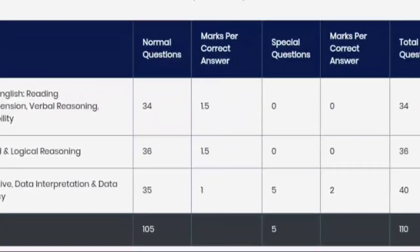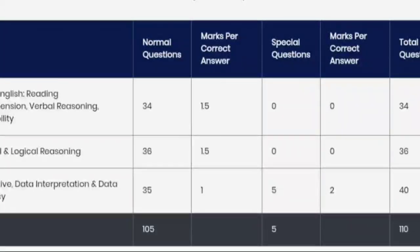The problem now is that the quant weightage has increased to 35 questions. Earlier I made a video saying you could crack SYMBI without touching maths, but now you have to do something in maths. However, Data Sufficiency and DI are also included. Out of 35 questions, if the pattern holds, roughly 8-10 questions will be on DI/Data Sufficiency and the remaining 25 on maths.